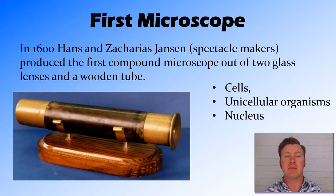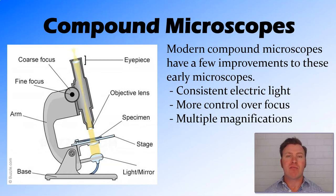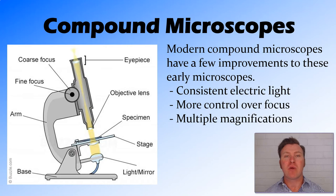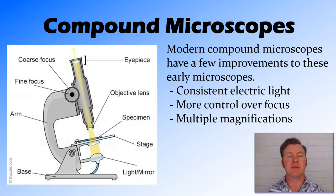They were also seeing the nucleus and some of the larger organelles within those cells. Our modern compound microscopes are basically the same thing with a few improvements. We still have two lenses that are separated, and in a lot of microscopes now those lenses are interchangeable — we have a rotating nosepiece with a number of different lenses on it for different magnifications. We also have a consistent light source.